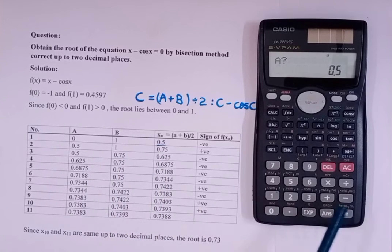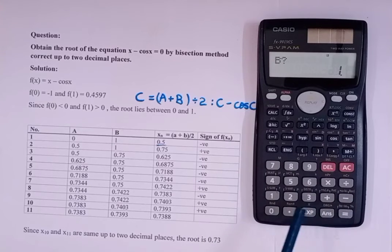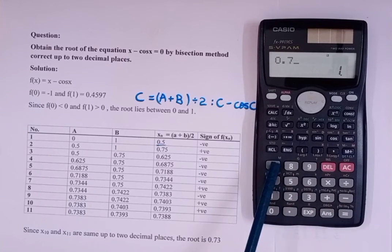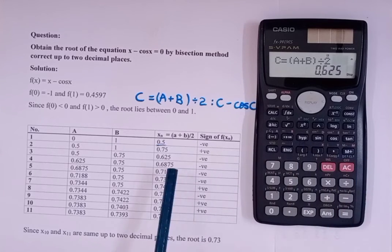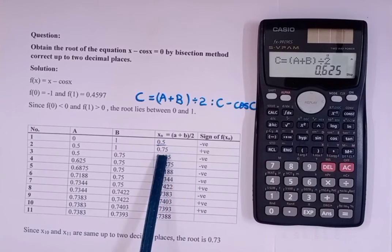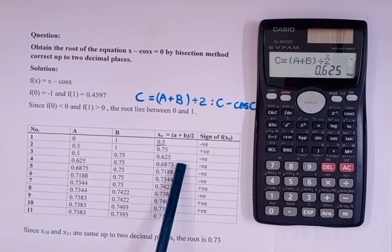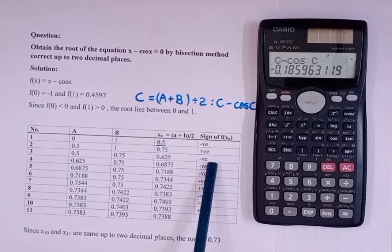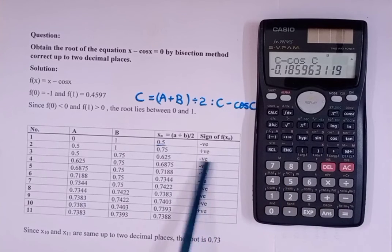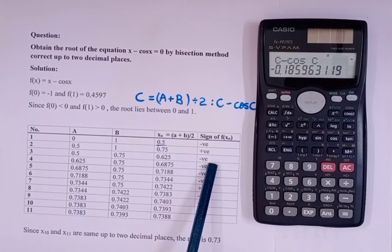Press Equal to again. Enter a = 0.5, Equal to, and b = 0.75, Equal to. We get xn = 0.625. Press Equal to and we get minus 0.185, which is a negative sign.